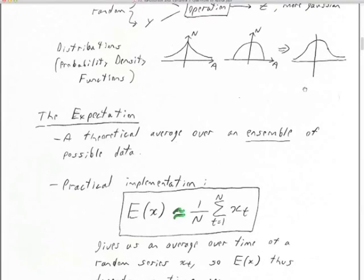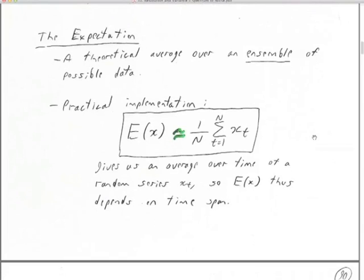Because we're talking about seismograms and noise on seismograms, I'm often showing amplitude distributions centered at zero amplitude with equal numbers of negative and positive samples. To understand noise and random processes, we have to get used to the idea called the expectation. The expectation is a theory of dealing with random processes — it is a theoretical average over the ensemble of possible data, where the data are coming from a random process.